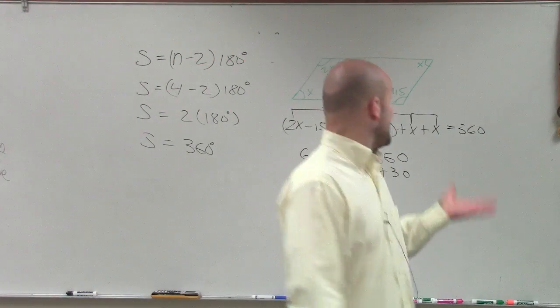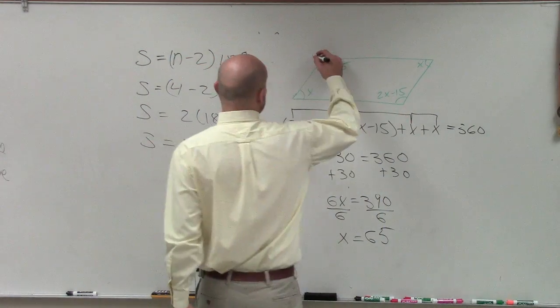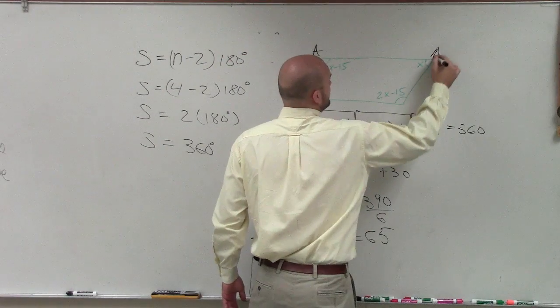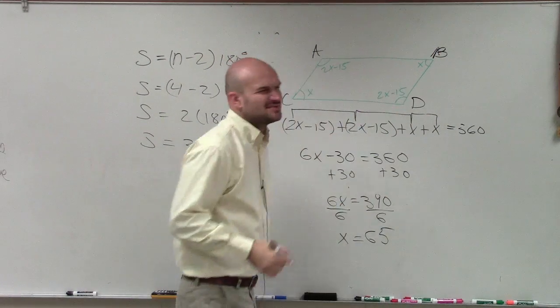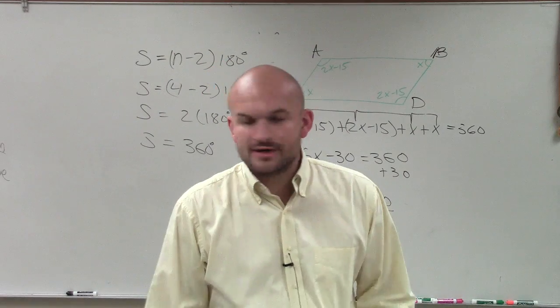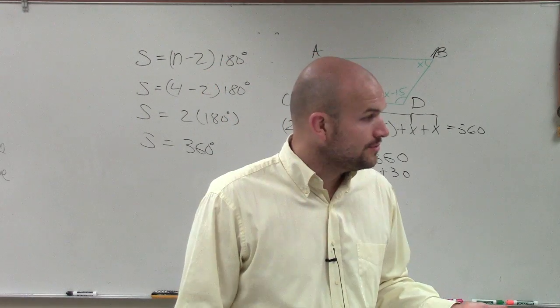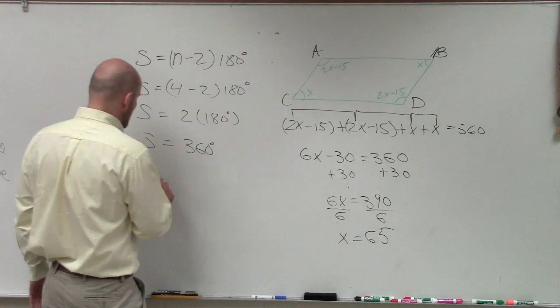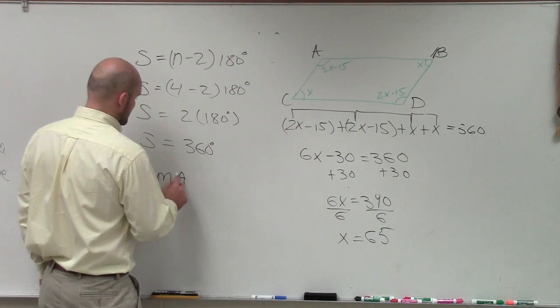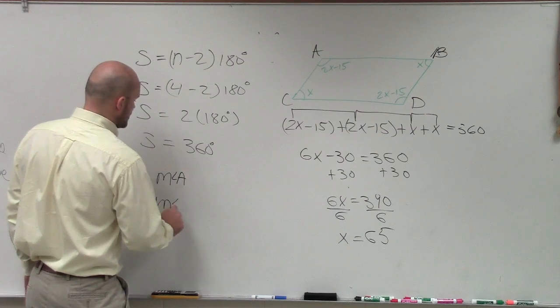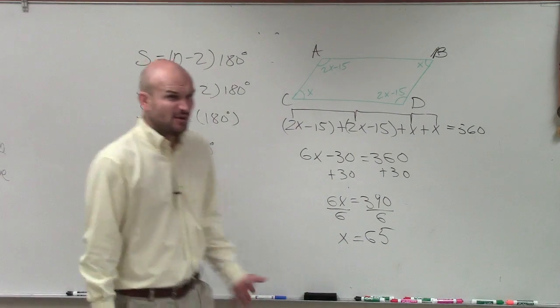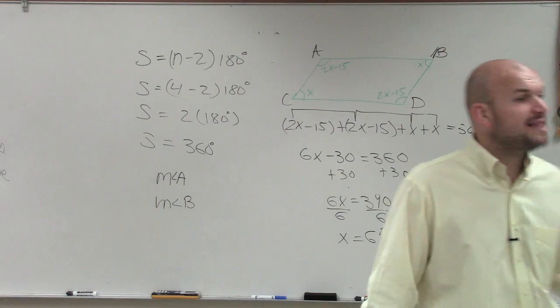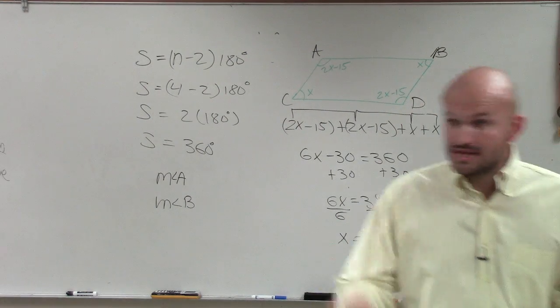So x equals 65. Now, one problem I didn't ask, but ladies and gentlemen, what if I said A, B, C, D? This was kind of similar to a question that we had on your review. If I said x equals 65, what if I said find the measure of A and find the measure of angle B? So what if I asked you, I actually want you to find the measure of each one of those individual angles.